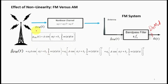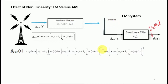The estimated frequency modulated signal at the receiver is the input multiplied by coefficient a1 as the first term, the square of the input multiplied by a2 as the second term, and the cube of the input multiplied by a3 as the third term. This gives the comprehensive estimated signal at the output of the antenna terminal for the FM receiver.